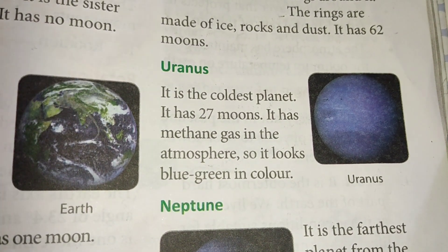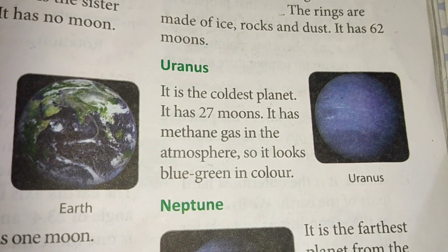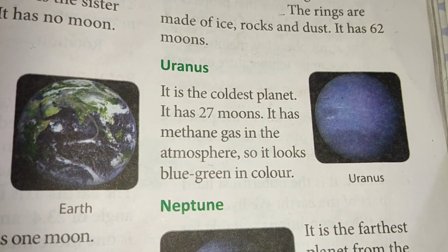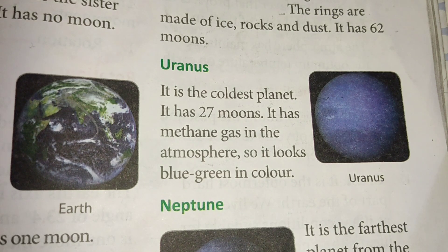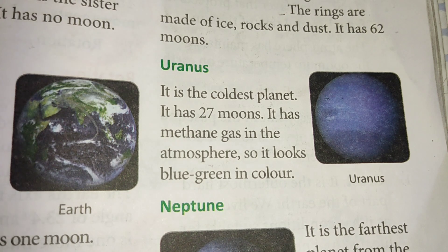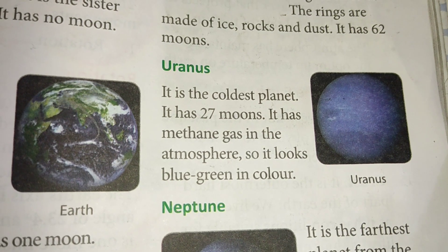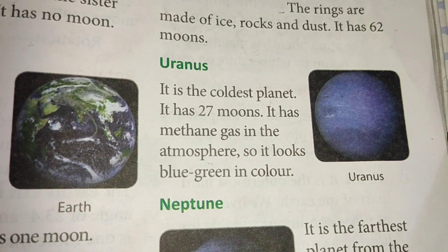The seventh planet is Uranus. It is the coldest planet and it has 27 moons. It has methane gas in the atmosphere, so it looks blue-green in color.